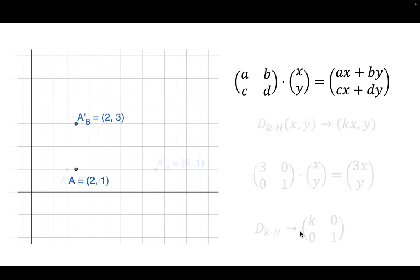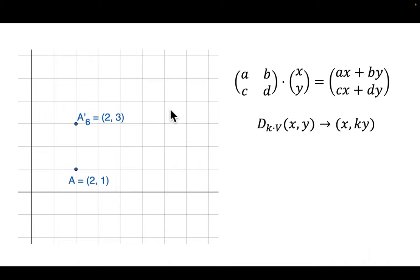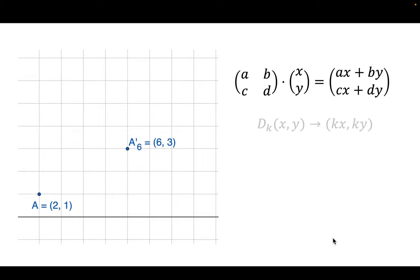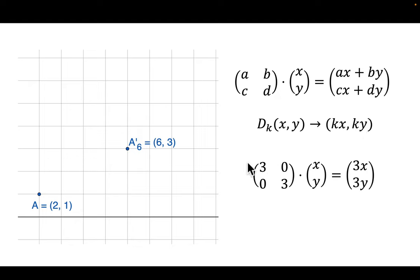A vertical dilation multiplies just the y-value by k; the matrix reverses those two numbers to [1, 0; 0, k]. If you want to dilate both horizontally and vertically by the same factor k, you multiply both x and y by k — that's scalar multiplication. The matrix [k, 0; 0, k] — for example [3, 0; 0, 3] — gives (3x, 3y), tripling both x and y and dilating the shape both vertically and horizontally.